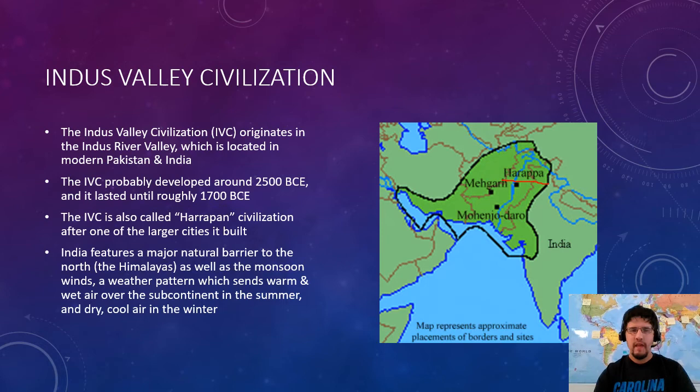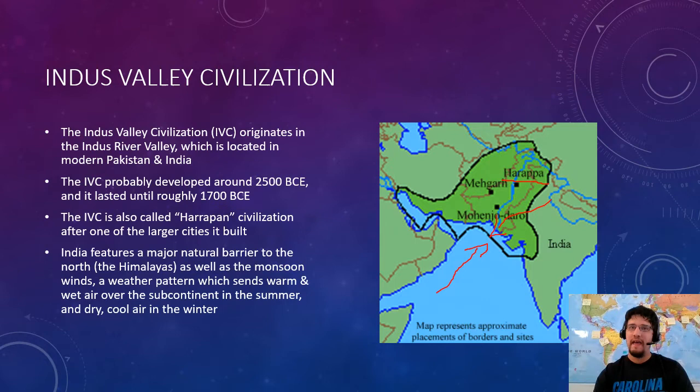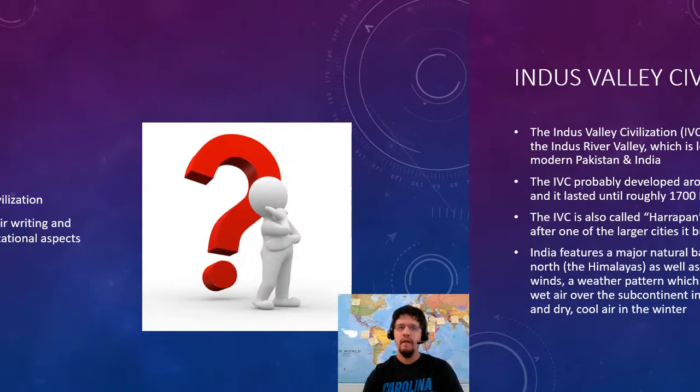India is actually a pretty great place to build a civilization. You have these monsoon wind patterns that make it so there are only two seasons: a hot and dry season and a wet season, because half the year the monsoon winds blow in off the ocean and half the year they blow out off the land. You also have the Himalayas, the tallest mountain range in the world, providing a natural barrier against the possibility of invasion — at least so goes the theory.